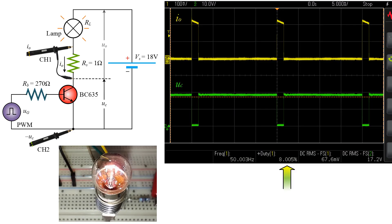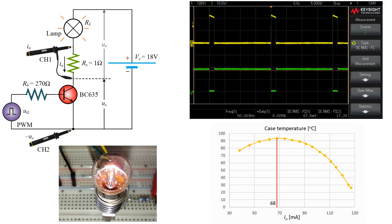At 8% duty cycle, the RMS current in the lamp is 68 milliampere. For the same current, the transistor temperature was 93 degrees Celsius in the conventional circuit.